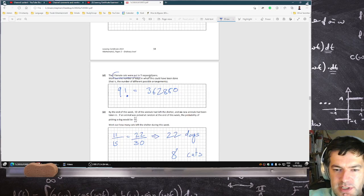Nine female cats were put into nine pens. How many ways could this be done? This is a nine factorial question.